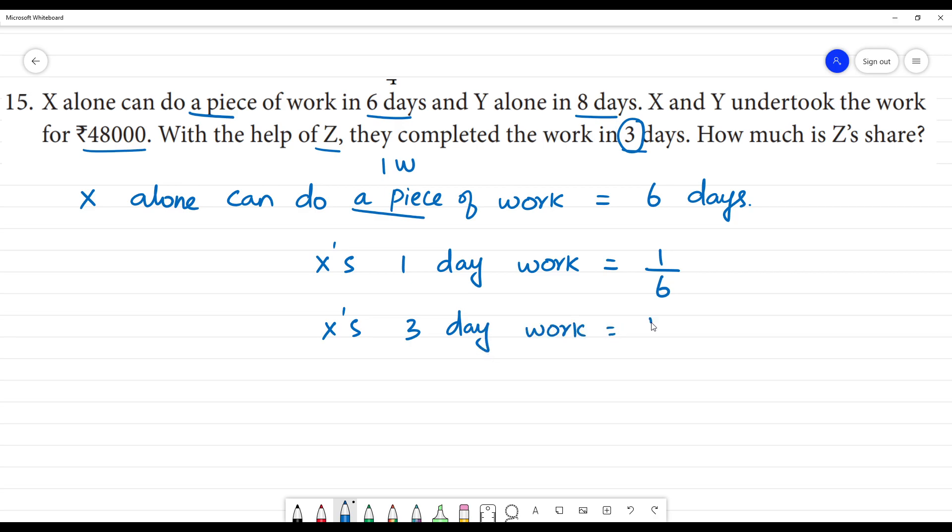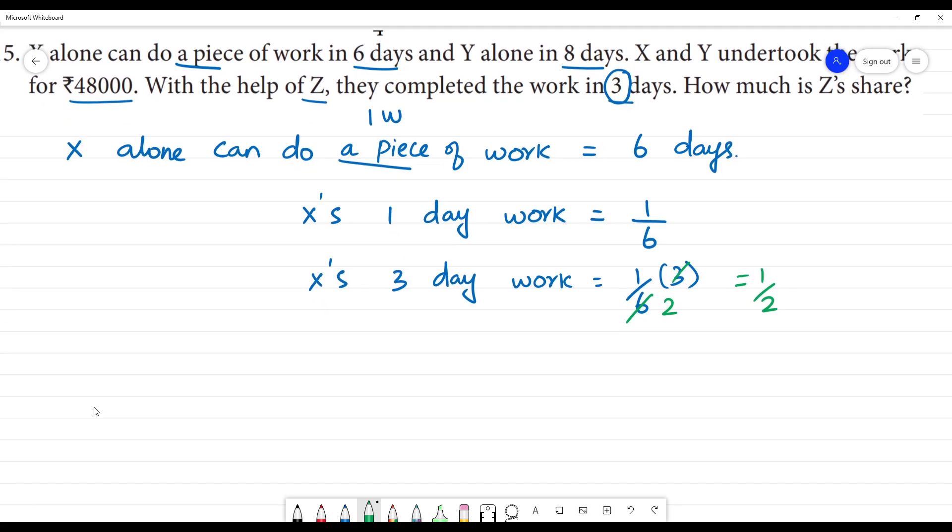X's 3 day work is 1/6 into 3, which equals 1/2. So in 3 days, X can do half of the work.